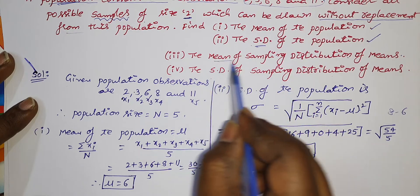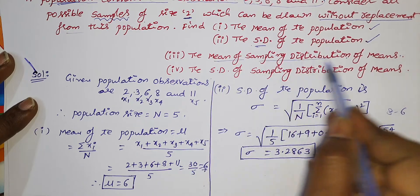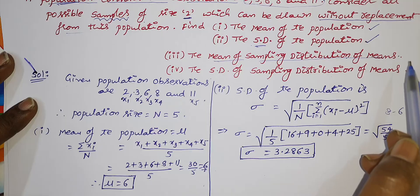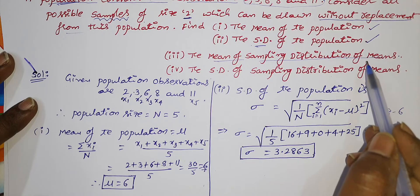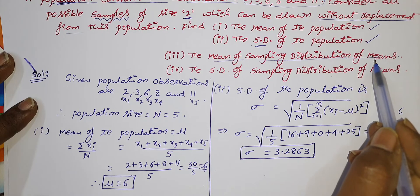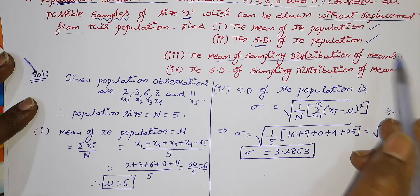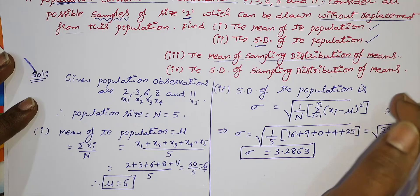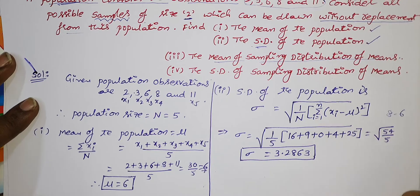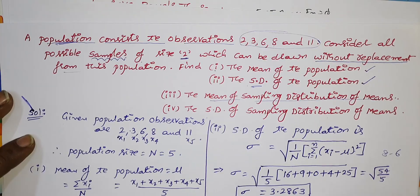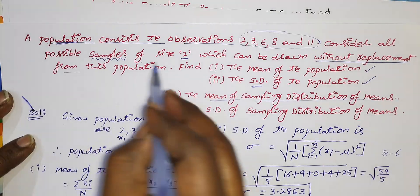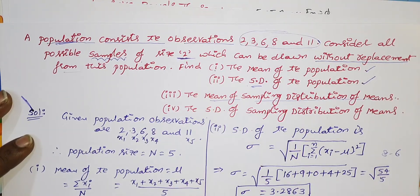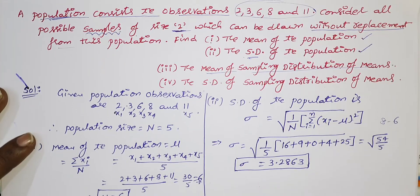Now we find the mean of the sampling distribution of means. First, we must list all possible samples. The sample size is 2, given in the problem statement.